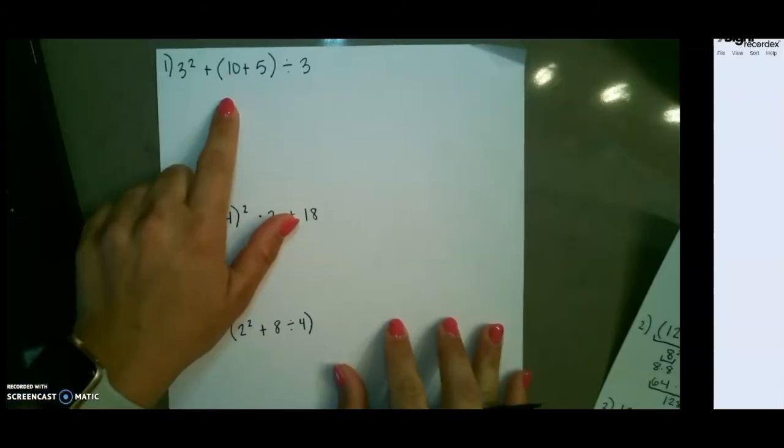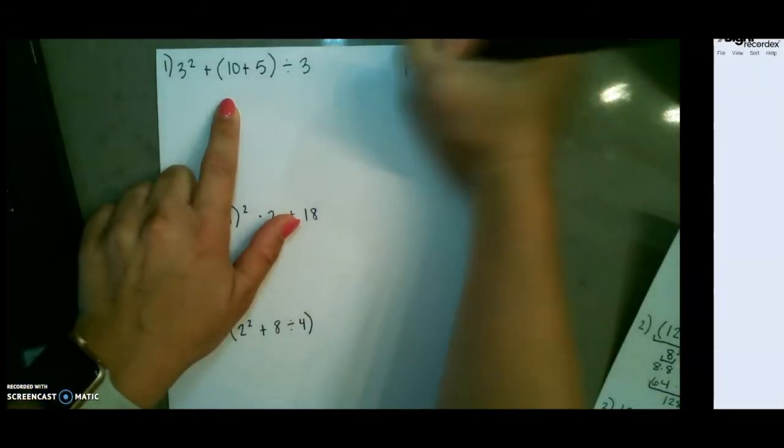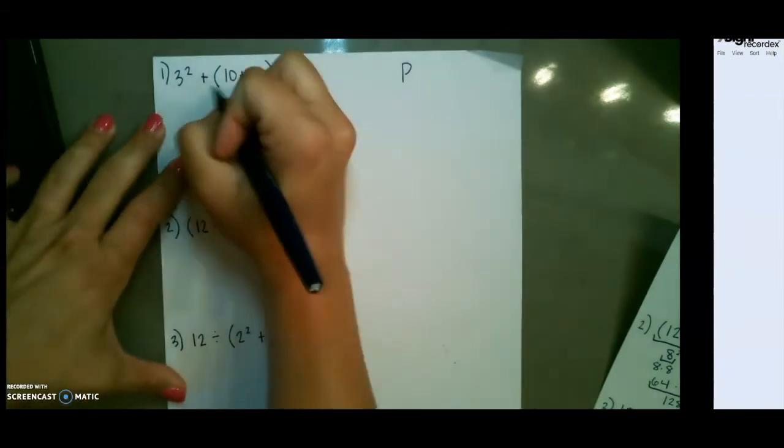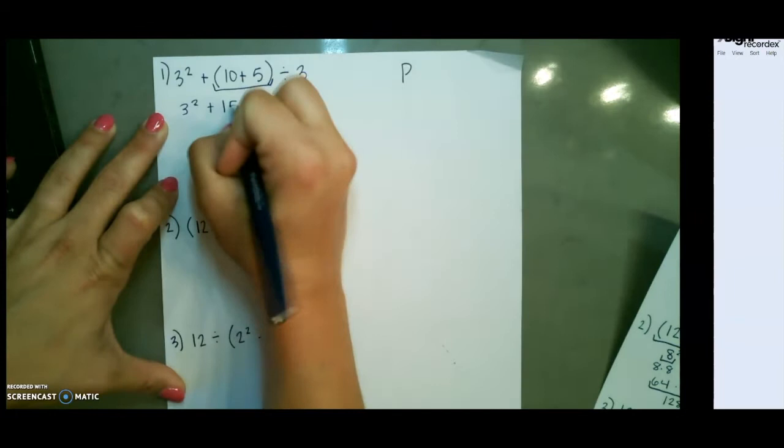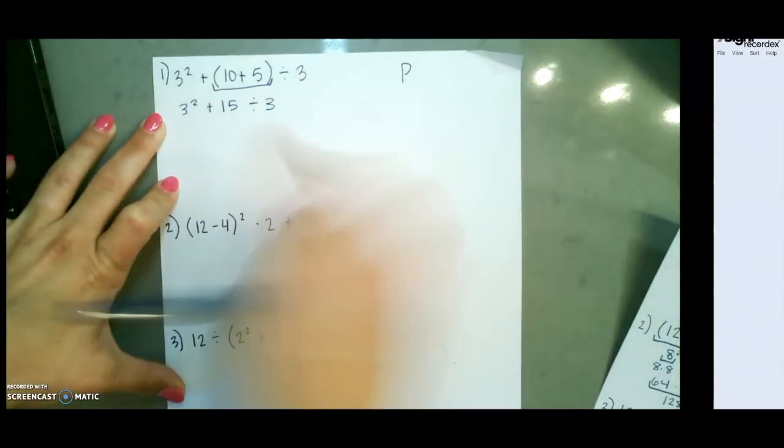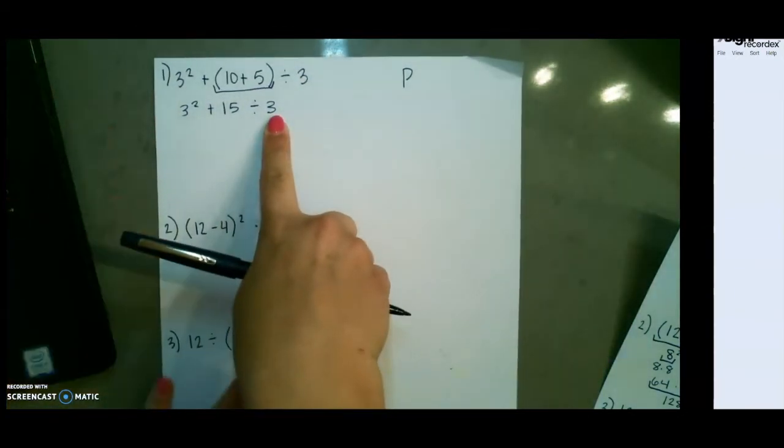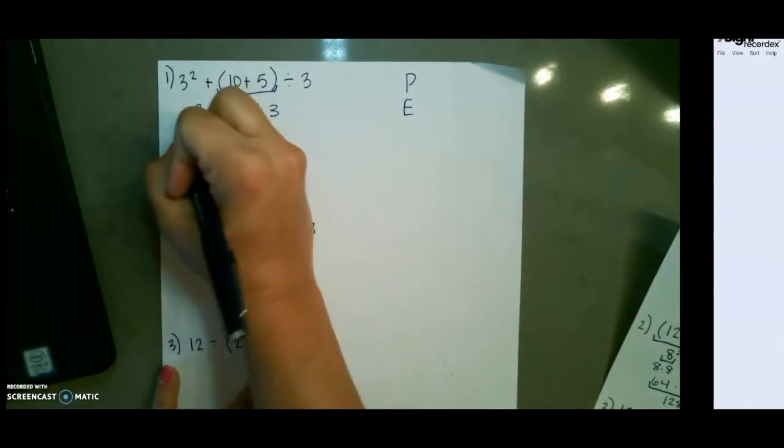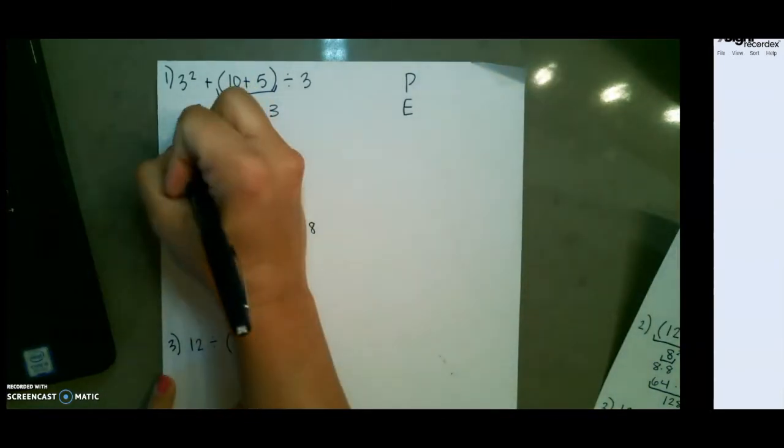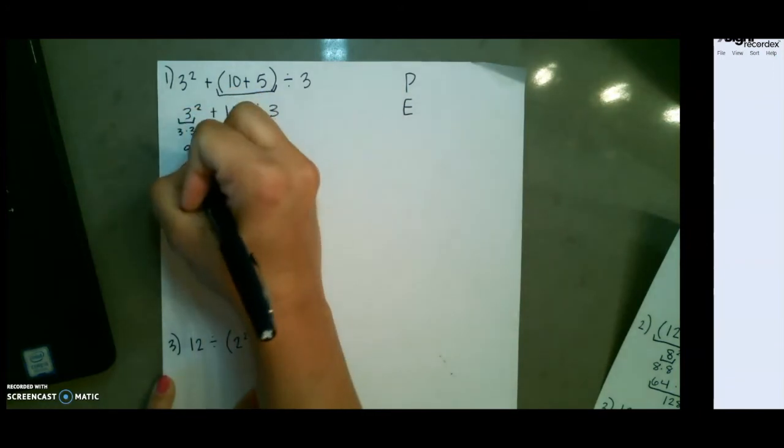On our first example, we want to do parentheses first. So I'm going to do 10 plus 5, which gives me 15. I always rewrite the whole problem so that I don't miss any steps. Next, we want to do exponents. 3 to the second power is 3 times 3, which is 9.